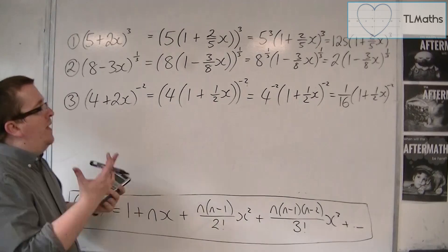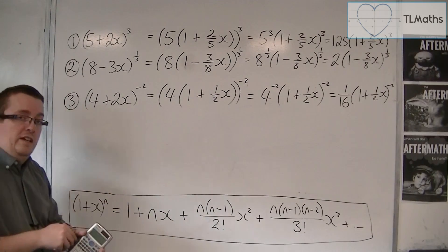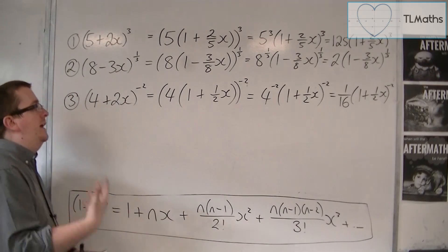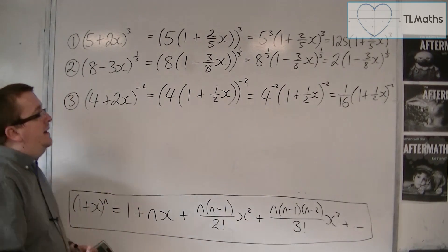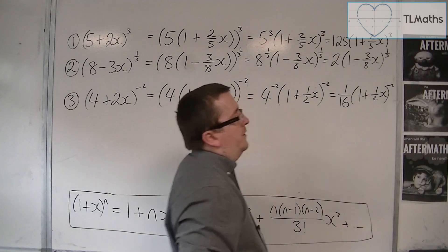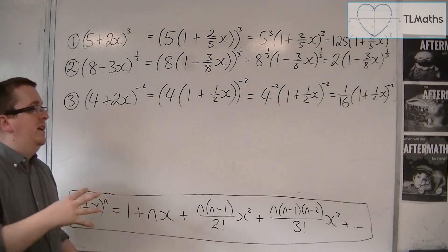And that is how we can do the first step of using this binomial expansion. You must get it into this format where you have 1 plus something or 1 minus something. Otherwise, the formula won't work.